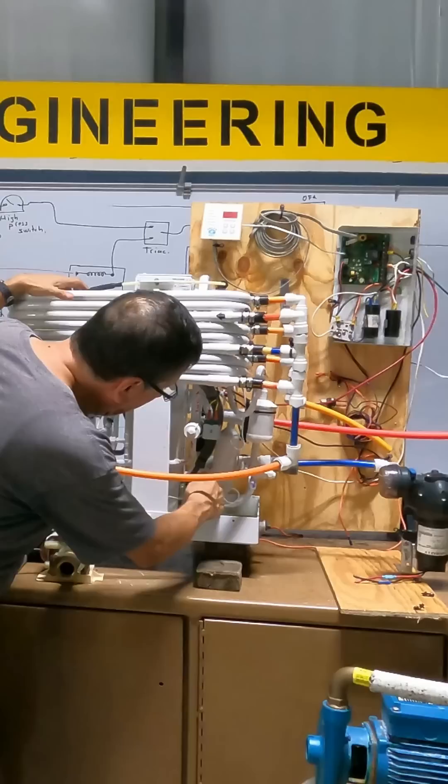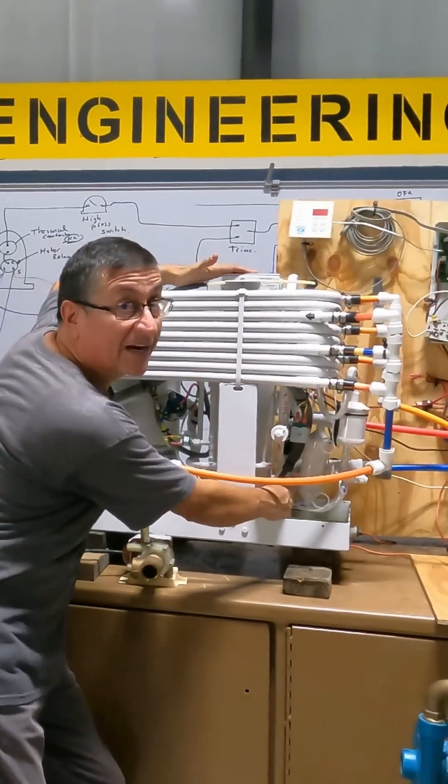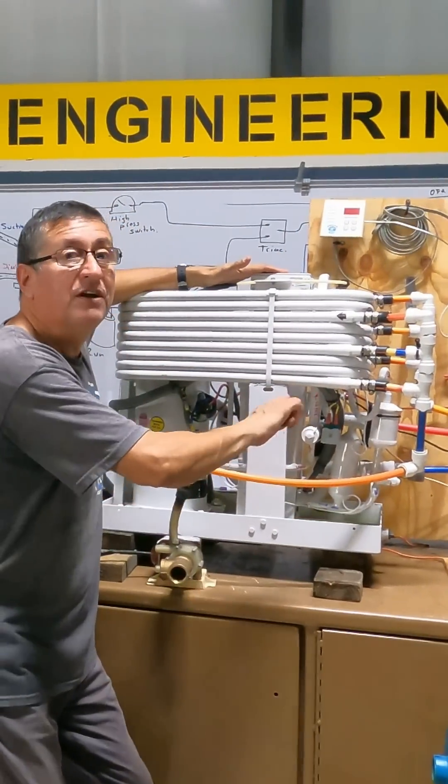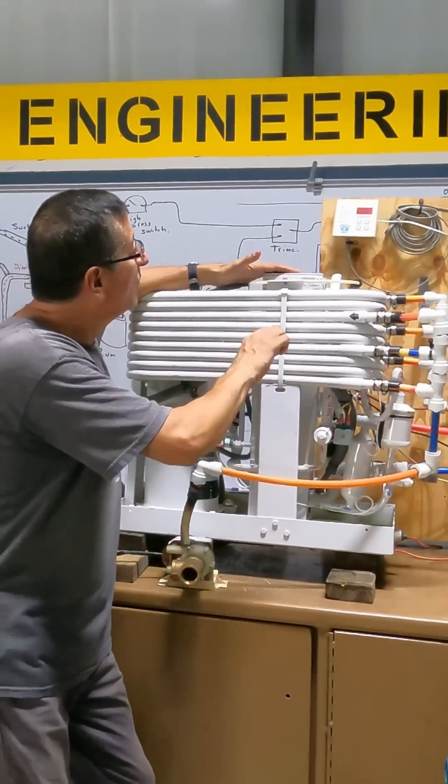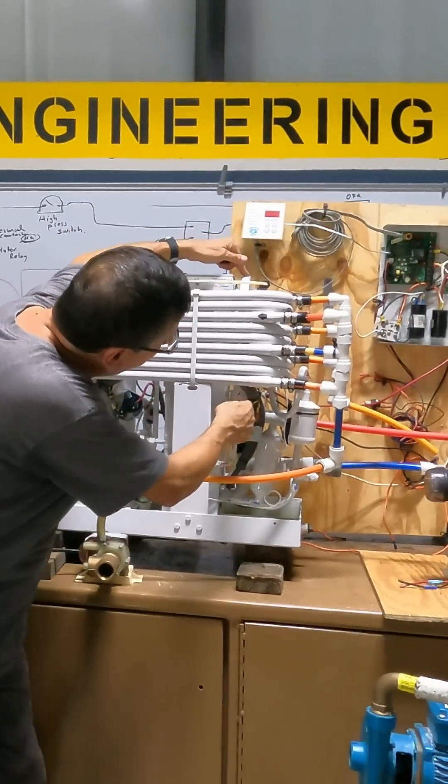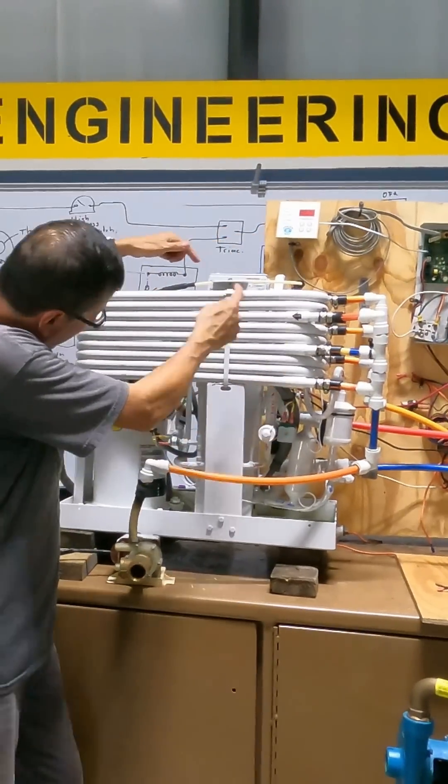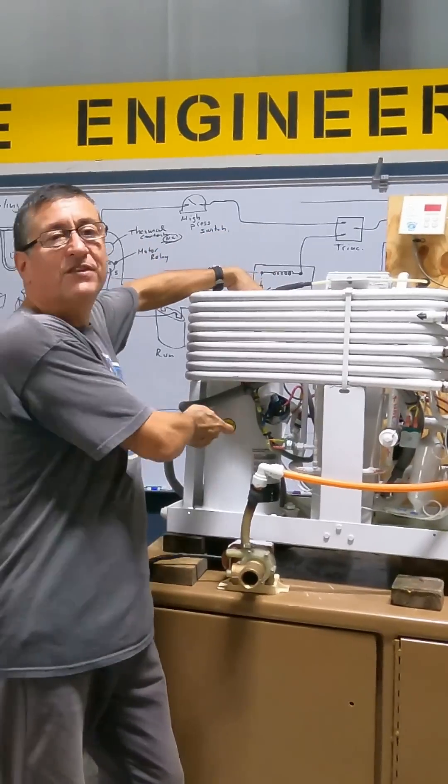The refrigerant goes here and enters in the bottom of this tower to start the process of evaporation. When the refrigerant is fully evaporated, it enters in the Y valve and returns in the suction side of this compressor.